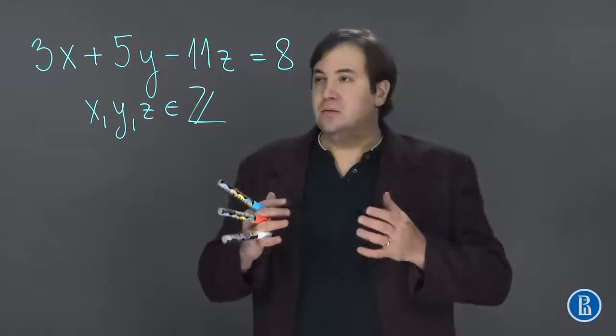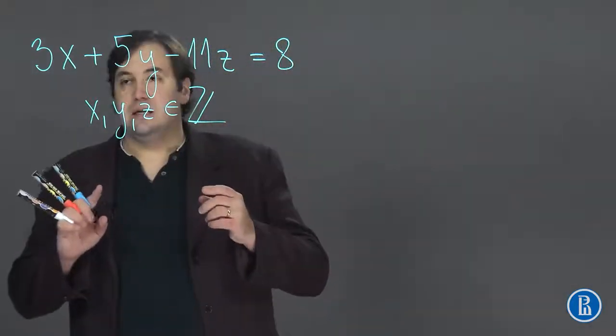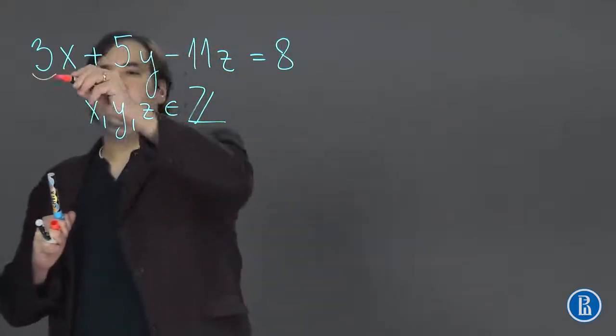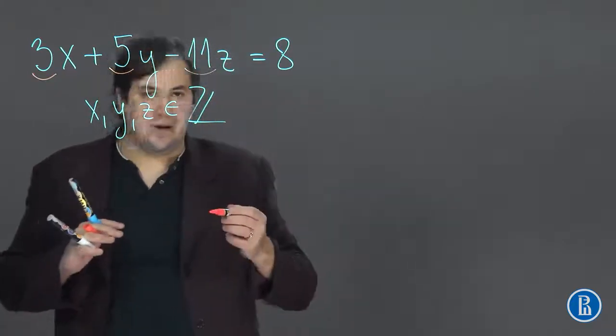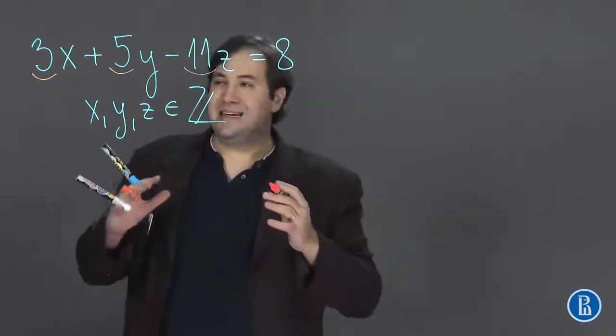The first step is to find the smallest coefficient among given. We see 3, 5 and 11, or minus 11, it doesn't matter. The smallest one of them is 3.